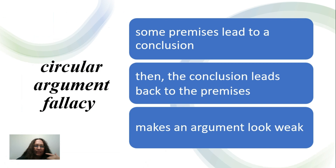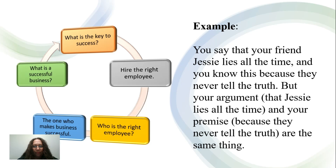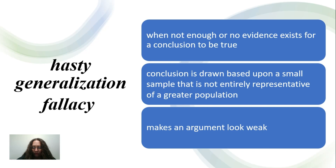Let's look at another type of fallacy: the circular argument fallacy. In this type of case, the circular argument relies on the issue that some premises lead to a conclusion, and therefore the conclusion leads back to the premise. The arguer just goes in circles and doesn't really make a clear point. For example: you say that your friend Jesse lies all the time, and you know this because they never tell the truth. But your argument and your premise are the same thing. Therefore, this is a circular argument and it's a logical fallacy.